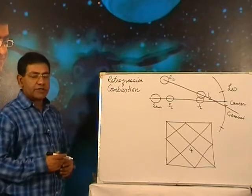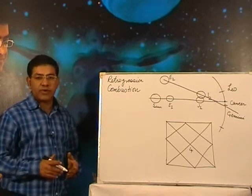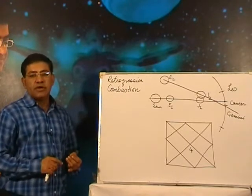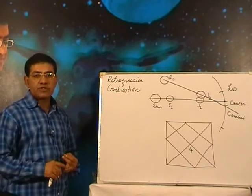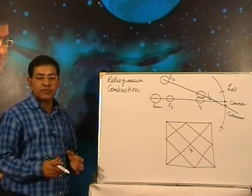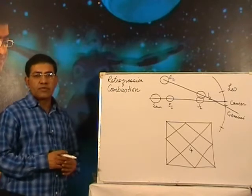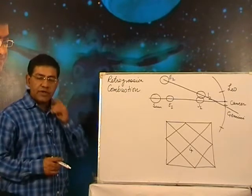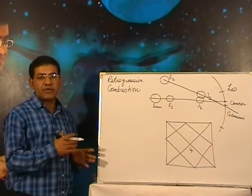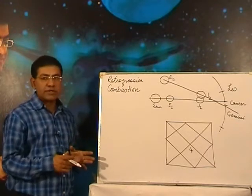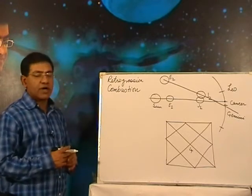I will explain here. There are two types of planets: one is the inferior planets, another is the superior planets. Inferior doesn't mean they are less important. Inferior means they are internal planets between Sun and Earth—Mercury and Venus. Exterior planets are Mars, Jupiter, Saturn, etc.